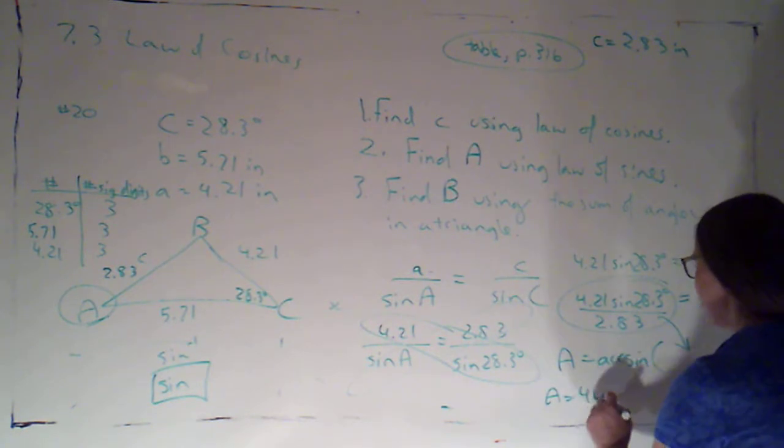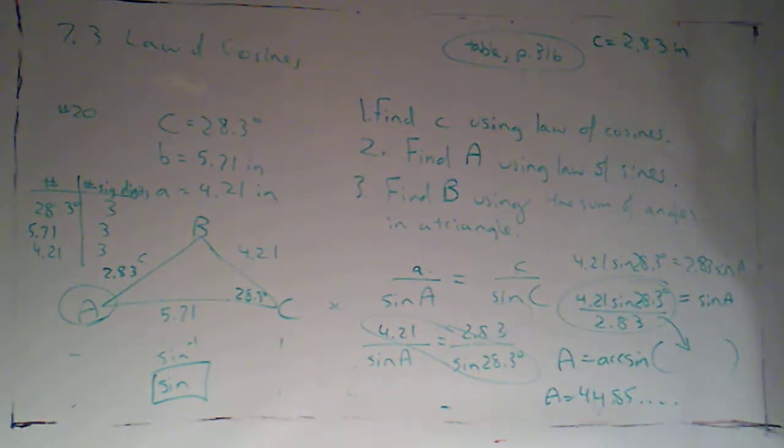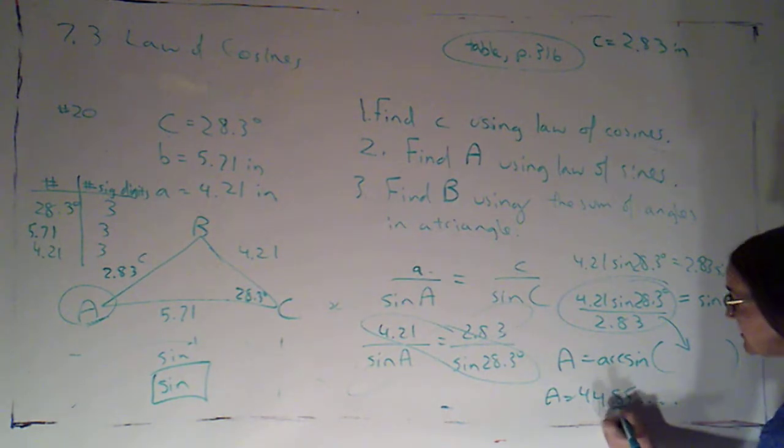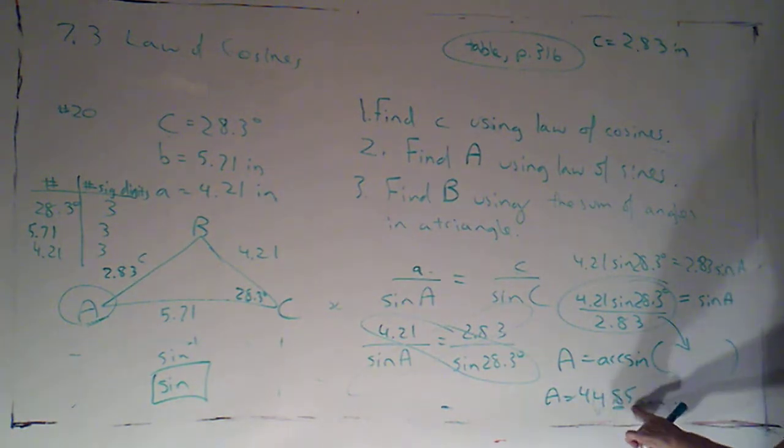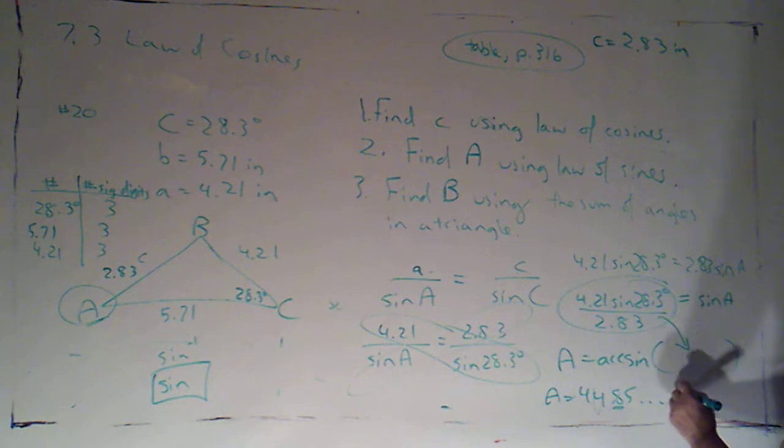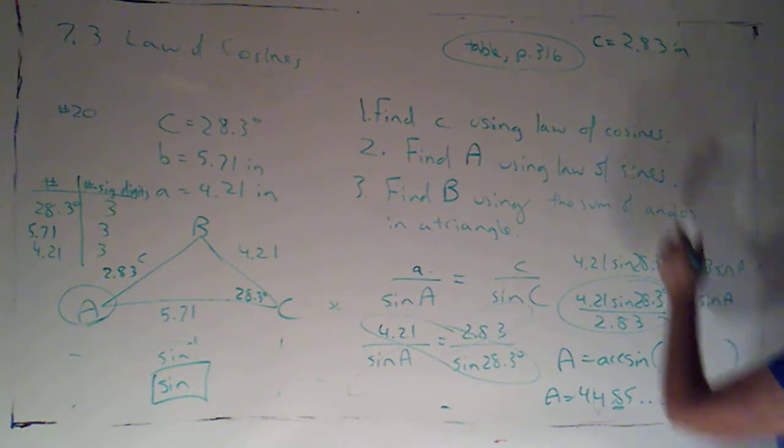That's 44.85 blah blah. We're rounding things to three significant digits. So, since that digit is five, we would round up. So, this would be about 44.9 degrees.